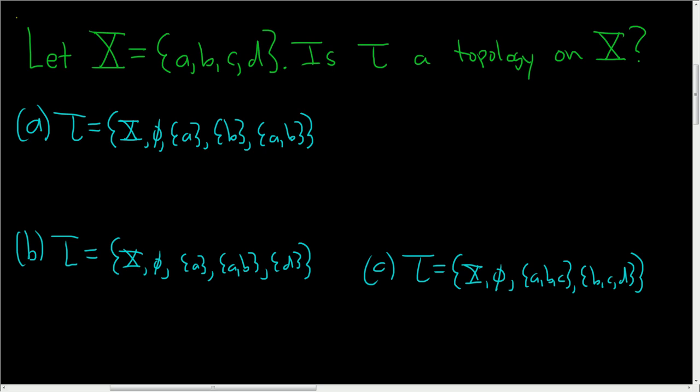So we have a set X containing four elements: A, B, C, D, and the question is, is tau a topology on capital X? So before we go through the examples, let me quickly remind you what it means for it to be a topology.